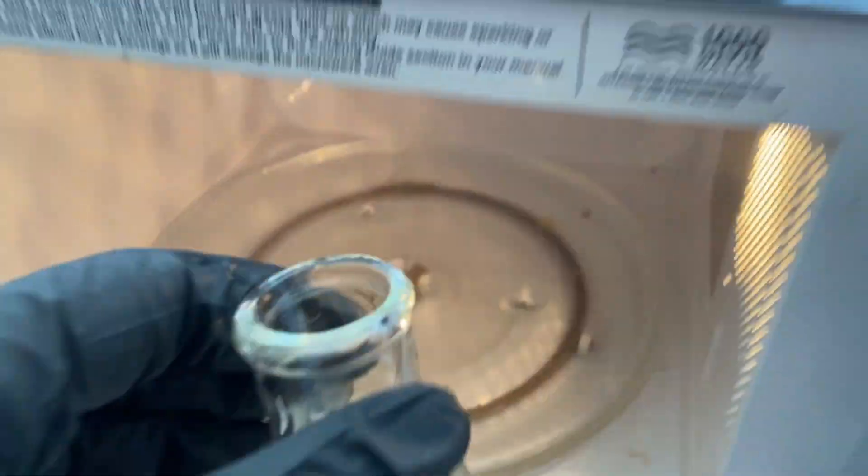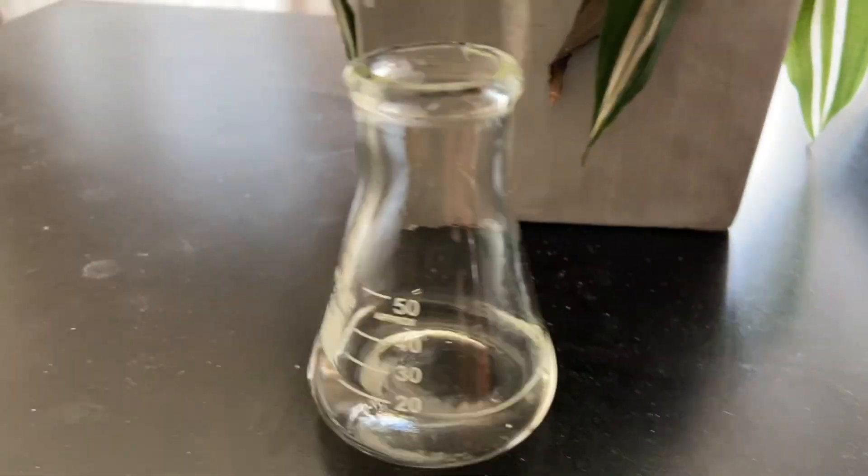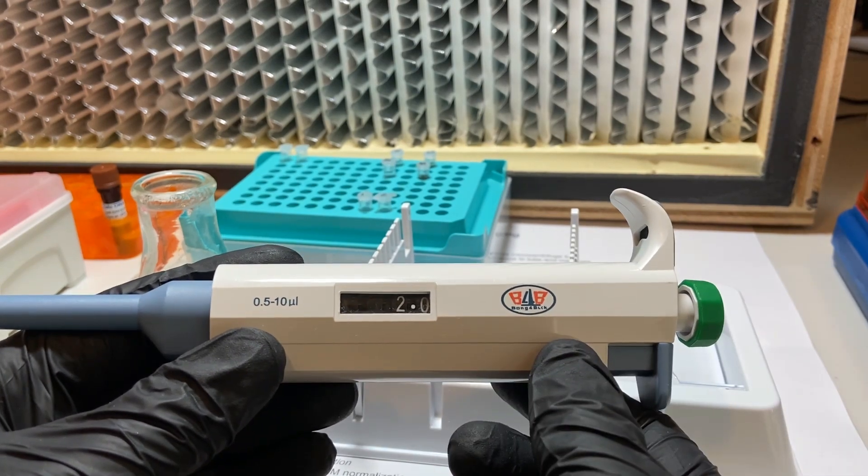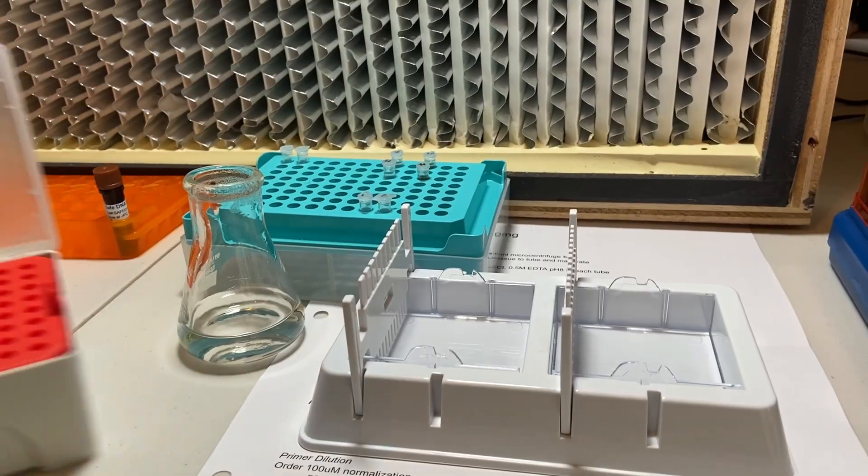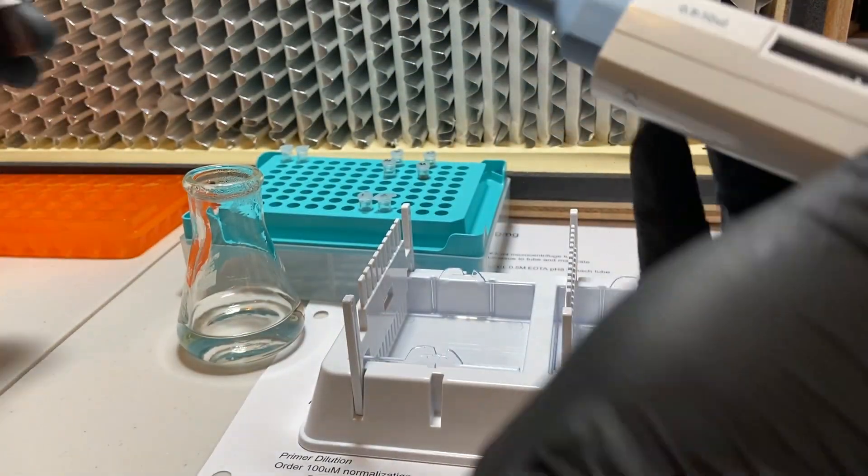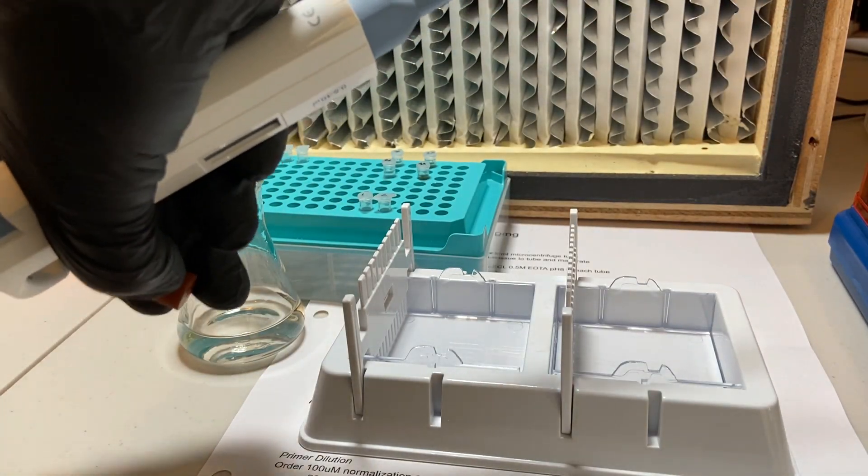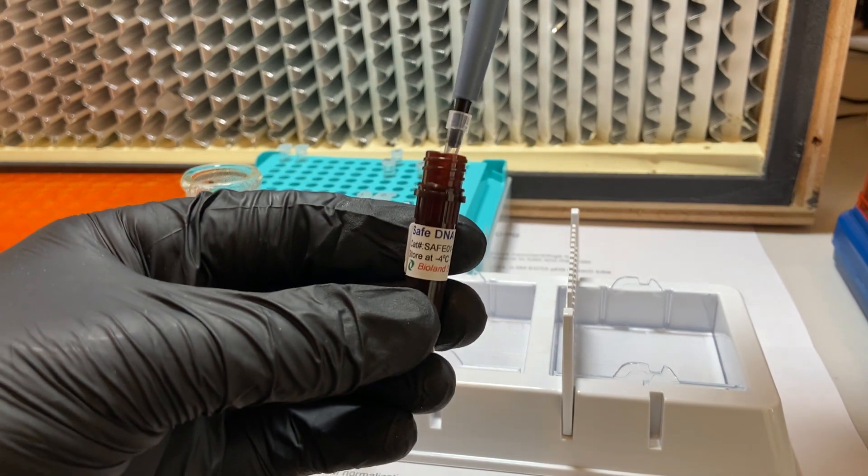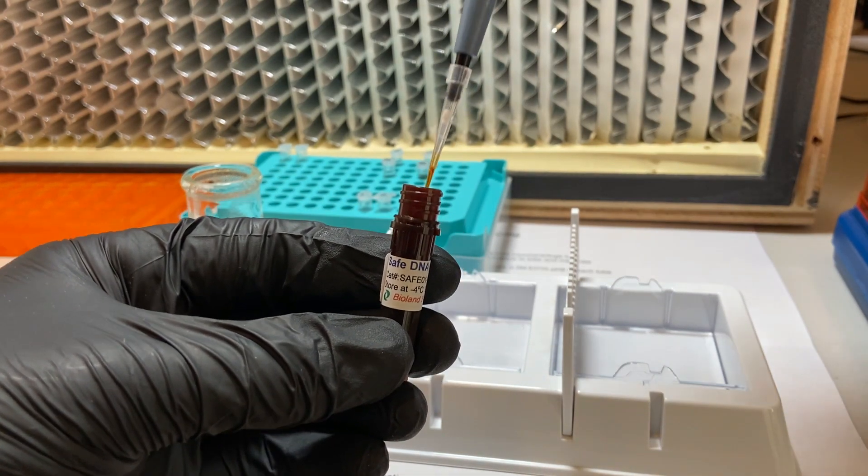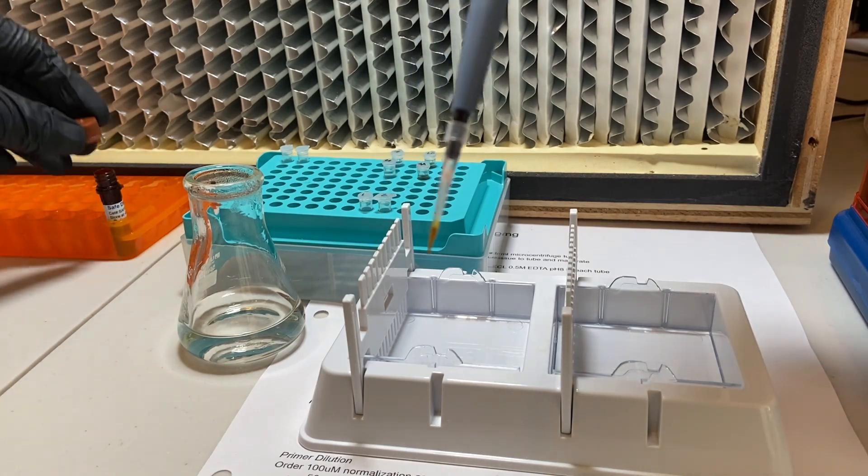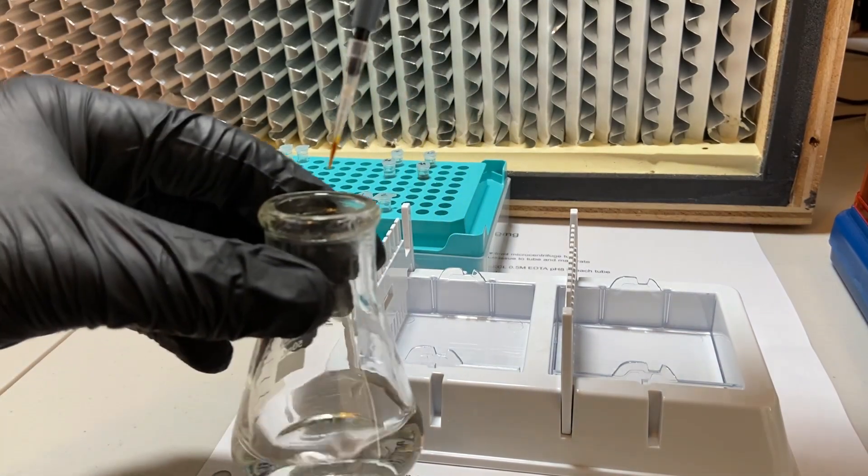After microwaving the gel for 30 seconds, it should all be melted. The next step is we need to add DNA stain so that when we add the DNA to our gel, the stain will bind to the DNA and cause it to fluoresce. So in this case, we're going to add 2 microliters of 10,000X gel stain to the gel after it's had a little bit of time to cool. You don't want to add it right away. Wait a couple of minutes for it to cool.